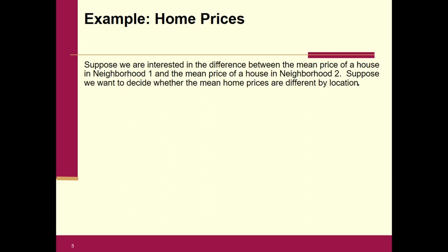Here's another example: suppose we are interested in the difference between the mean price of a house in neighborhood one and the mean price of a house in neighborhood two. In a real study, it doesn't matter what you call population one and population two — you're going to get the same results.